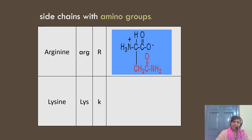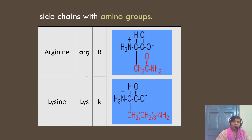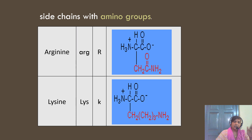The other two positively charged amino acids are arginine and lysine. Arginine has three-letter code ARG and single-letter code R; lysine has LYS and single-letter code K. Both have an extra amino group (NH2) in the side chain, which makes them basic and positively charged. So these four — glutamic acid, aspartic acid, arginine, and lysine — belong to the polar charged amino acids group.